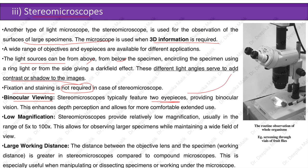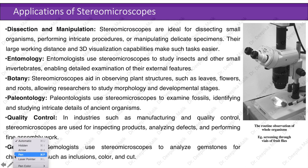Stereo microscopes typically feature two eyepieces providing binocular vision, which enhances depth perception and allows for comfortable extended use. They provide relatively low magnification, usually in the range of 5x to 200x, allowing for observing larger specimens while maintaining a wide field of view. The working distance — the distance between the objective lens and the specimen — is greater in stereo microscopes compared to compound microscopes, which is especially useful when manipulating or dissecting specimens.